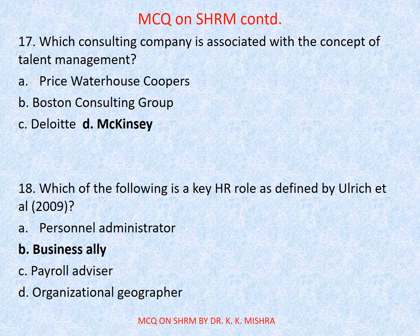Question number 18. Which of the following is a key HR role as defined by Ulrich et al? Options are A. Personal Administrator, B. Business Ally, C. Payroll Advisor, D. Organizational Geographer. Correct option is B. Business Ally.